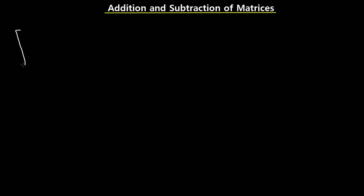Basically, you can say that a matrix is a rectangular array of numbers that can be enclosed within brackets. For example, if you have something of this nature — a bracket enclosing an array of numbers — if you have 2, 3, 4, 7, we simply refer to this as a matrix.